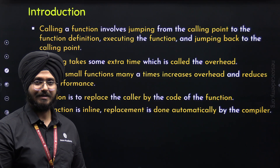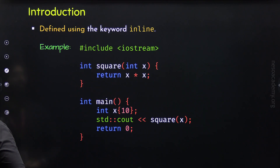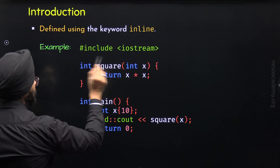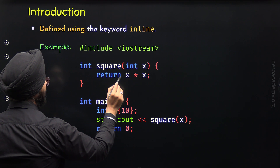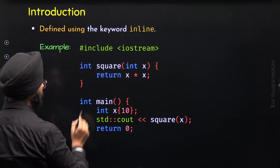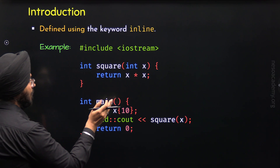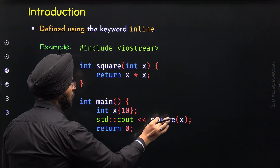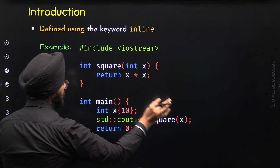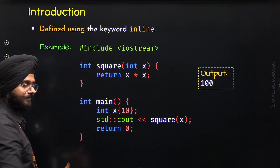To define an inline function, we use the keyword `inline`. Here is an example program: I have defined a square function with parameter x of type integer. This function returns x times x. Inside the main function, variable x of type integer with value 10 is defined, and we display the result of square of x — so the output is 100.